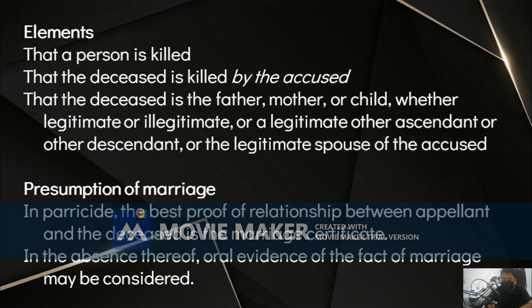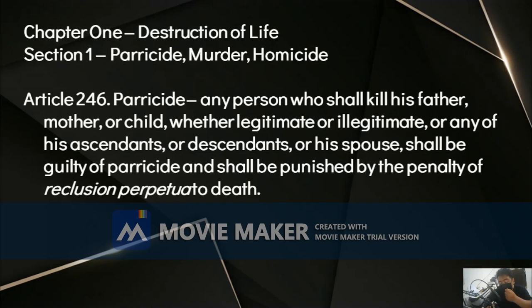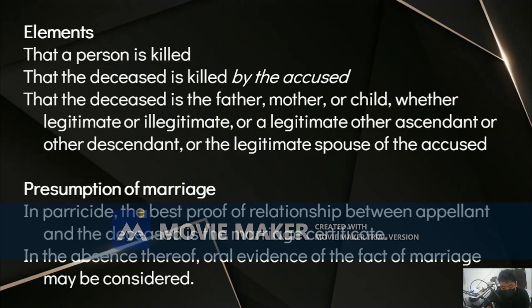Under 'other descendants and other ascendants,' parents and children are not included in that category — they are separately enumerated. The correct reading of Article 246 based on the Spanish text is 'any other descendant or ascendant.' The other descendant or ascendant must be legitimate. So he who kills an illegitimate grandfather or illegitimate grandson is not guilty of parricide, but only simple homicide or murder as the case may be.